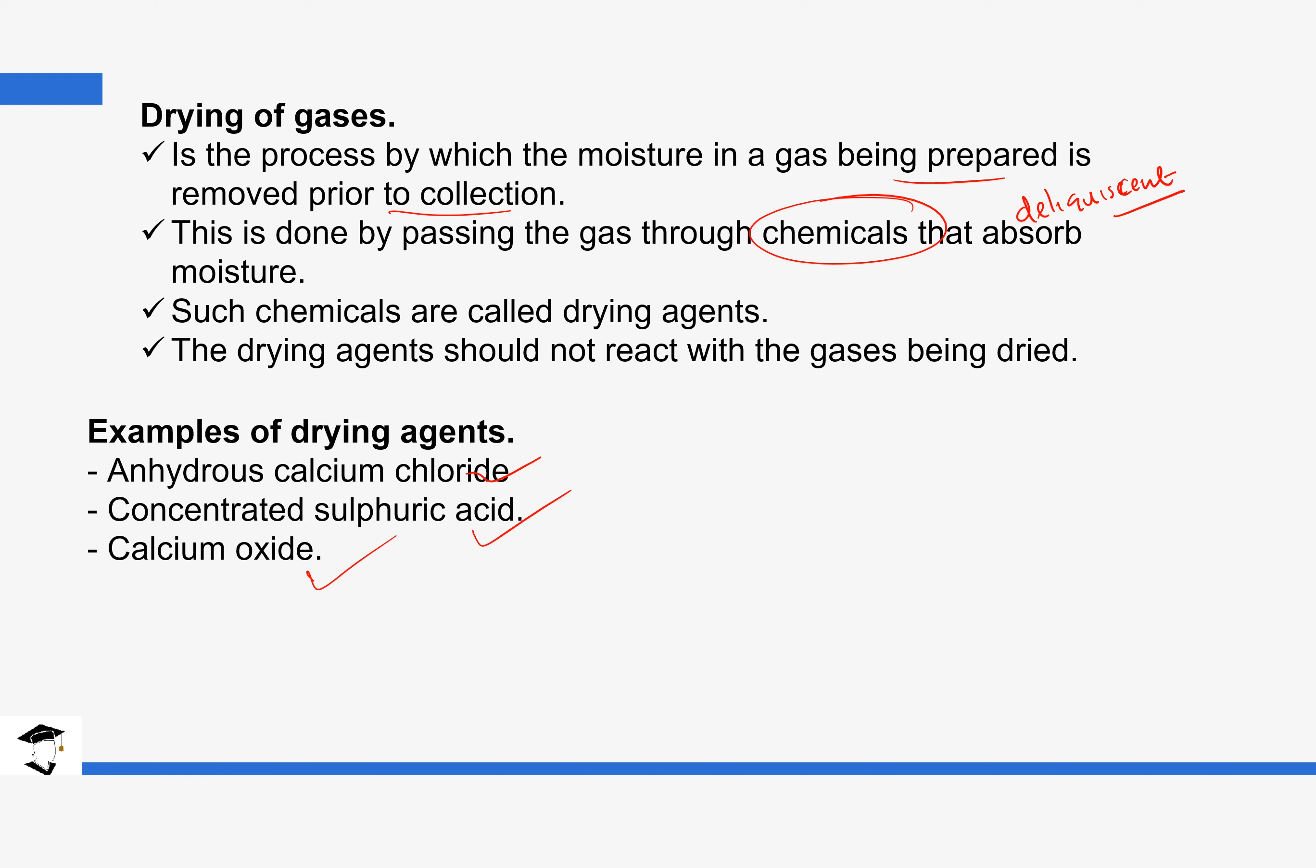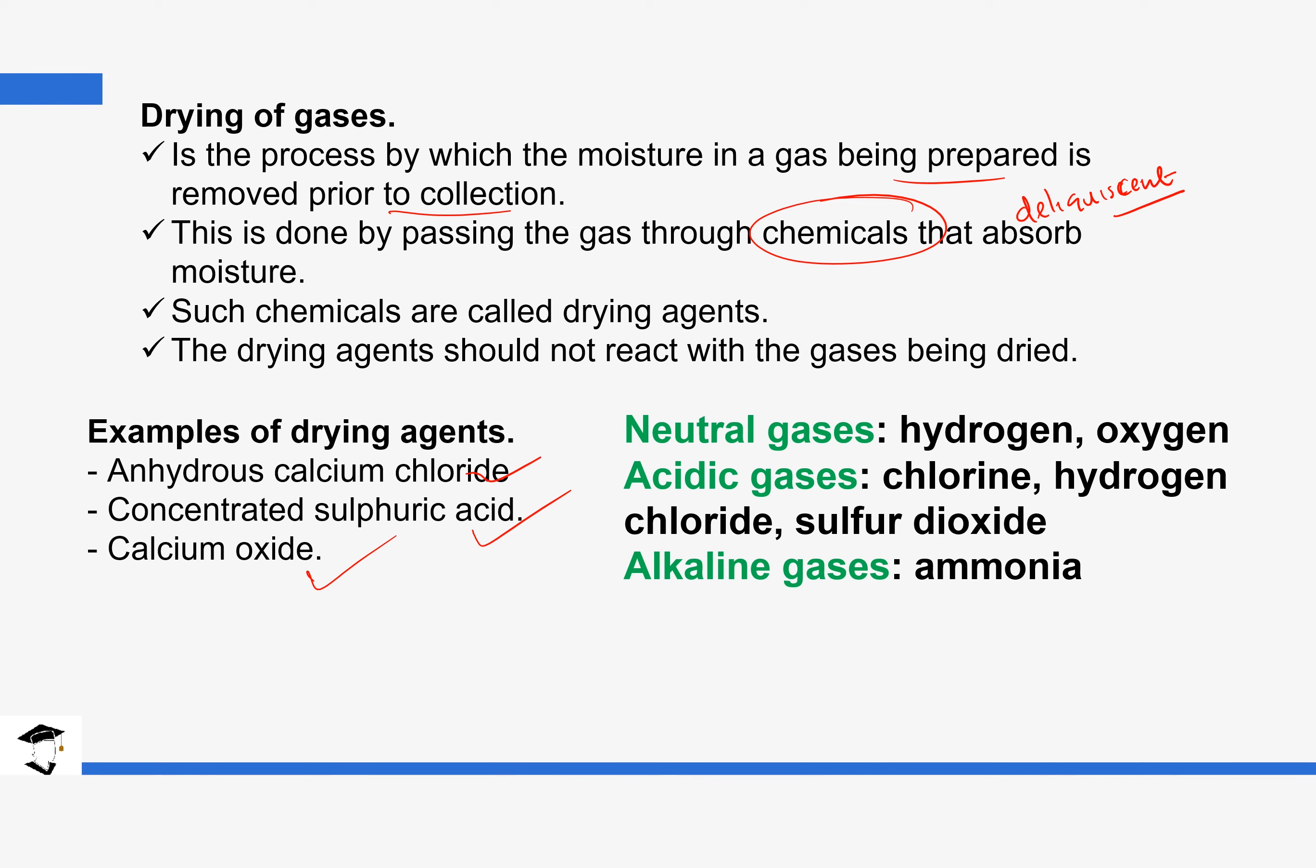We are going to come across this in the course of the next topics as we prepare different gases in Form 3 and Form 4. And we are going to be very specific. So anhydrous calcium chloride, concentrated sulfuric acid, and calcium oxide. We have to consider the different types of gases that are there. So we do have neutral gases, which is hydrogen and oxygen. These ones can use any of the drying agents. Hydrogen and oxygen can be dried with anhydrous calcium chloride, concentrated sulfuric acid, and calcium oxide.